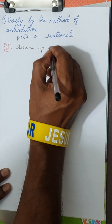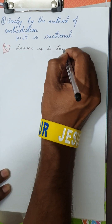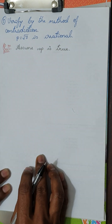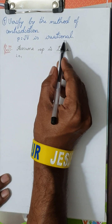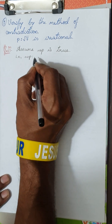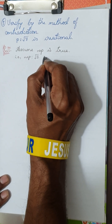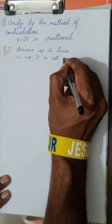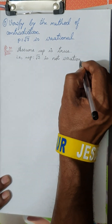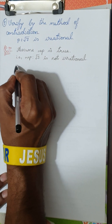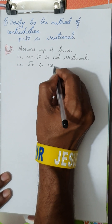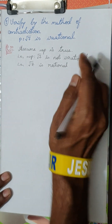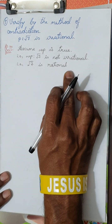Assume negation P is true. Actually P states root 7 is irrational, so negation P is: root 7 is not irrational, that is, root 7 is rational. So, we assume that root 7 is rational.